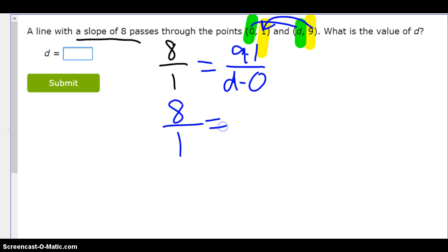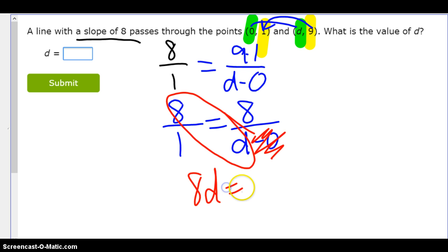Oh, this one comes out really nice. So, 8 over 1 equals, 9 minus 1 is 8, over D minus 0. Can you tell what D is right away? Yeah, if you wanted to, hey, this minus 0 doesn't even matter. You could go like this. 8D equals 8. But, did you see that right away that the answer is just D equals 1?